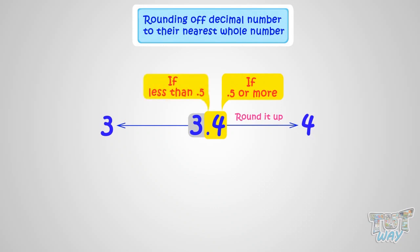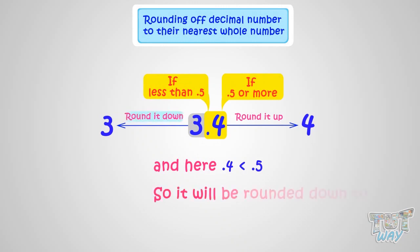And in this case, 0.4 is less than 0.5. So we will round it down to the previous whole number, that is, 3.